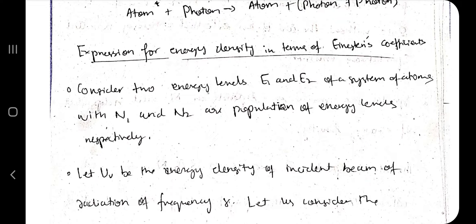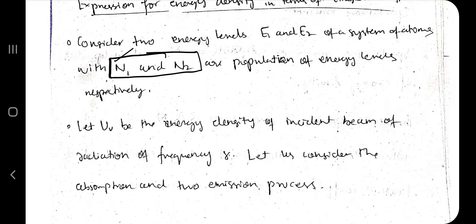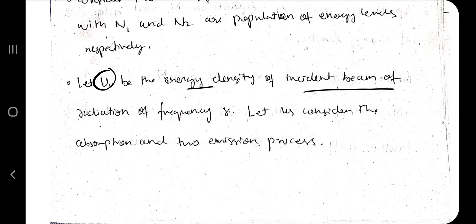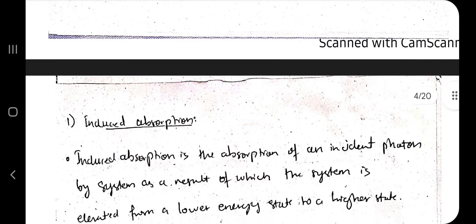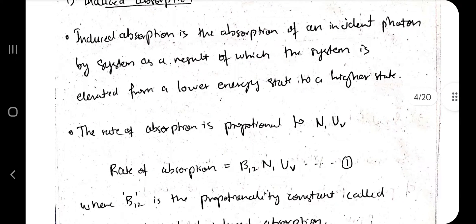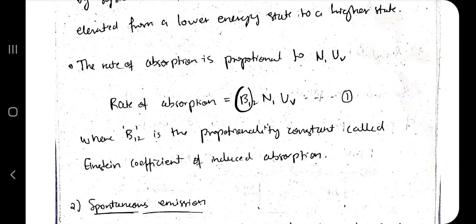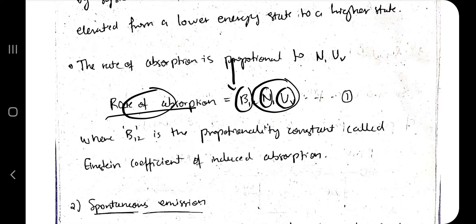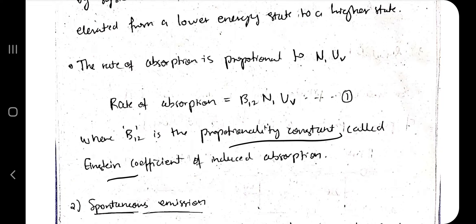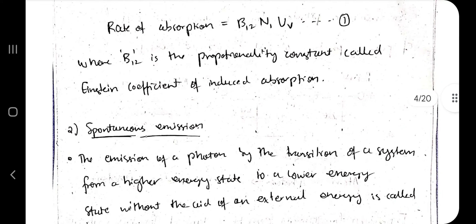For the derivation of Einstein's coefficients, there are two energy levels E1 (lower) and E2 (higher), with N1 and N2 being the number of atoms (population) at each level, and U(nu) being the energy density of the incident radiation. For induced absorption, the rate of absorption is proportional to N1 times U(nu), so it equals B12 times N1 times U(nu), where B12 is Einstein's coefficient of induced absorption.